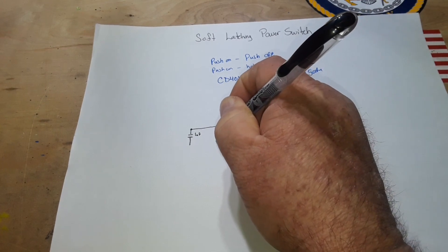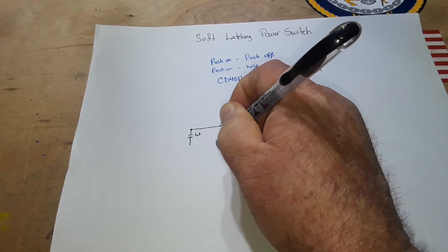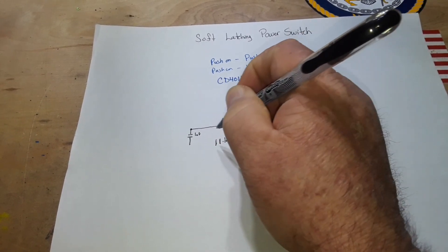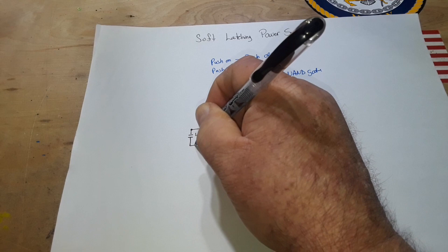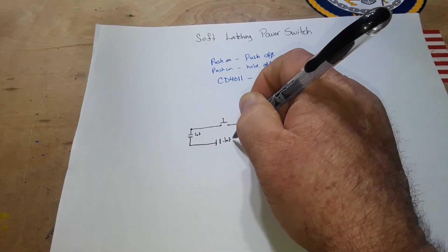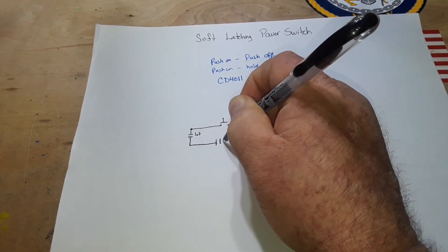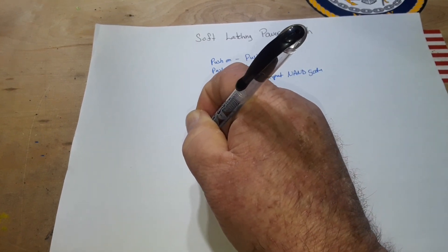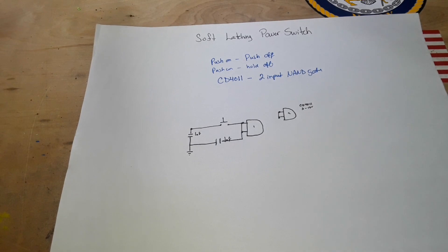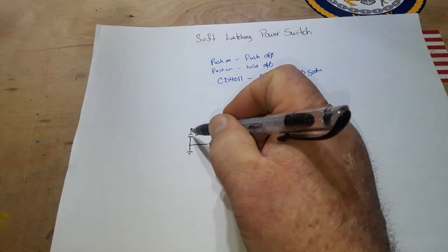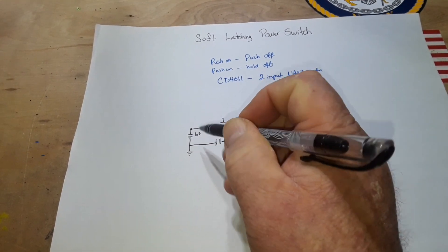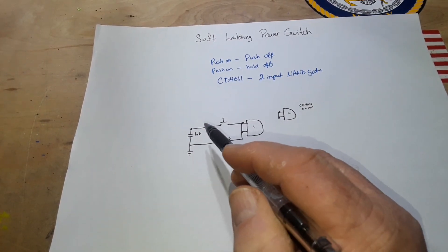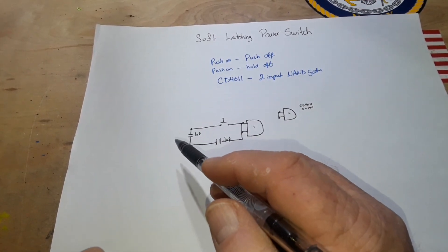And we're going to put another capacitor over here and this will be like, we'll go 0.1 microfarad on this one. It doesn't have to be as large. I drew right through that one didn't I? And then we'll have a ground right there. And that is going to keep this part of the circuit low initially and that's kind of important.